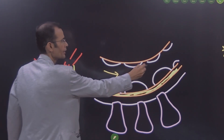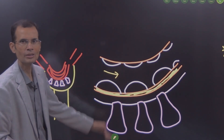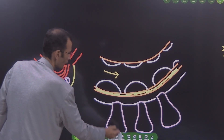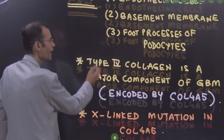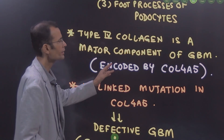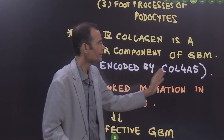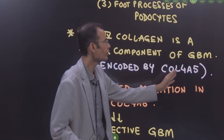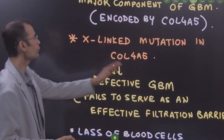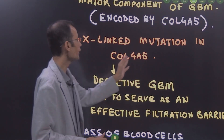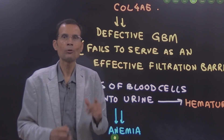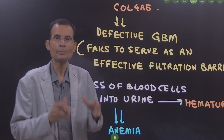Blood flows through this capillary and there is filtration into the Bowman's space. Type 4 collagen is a major component of this membrane and is encoded by a gene called COL4A5 — COL for collagen. There is an X-linked mutation in this gene COL4A5, which results in defective type 4 collagen in the glomerular basement membrane.